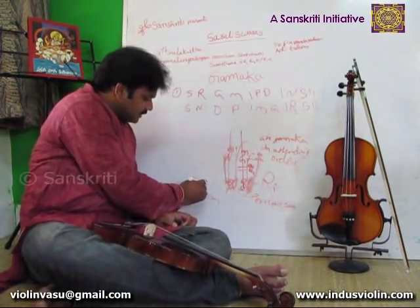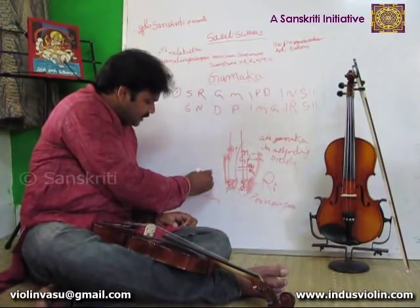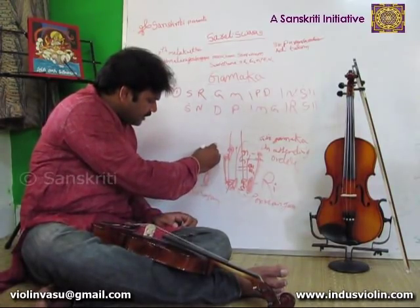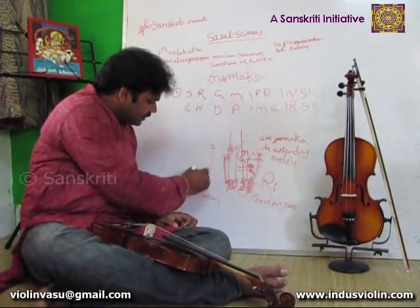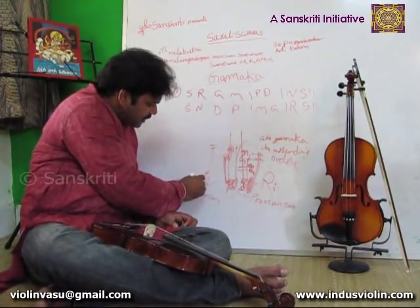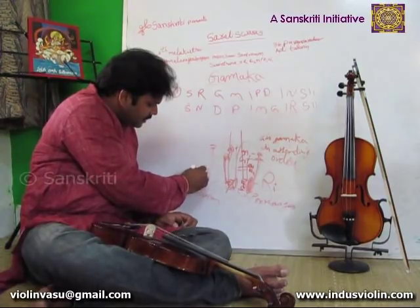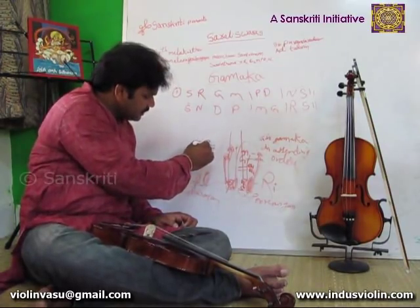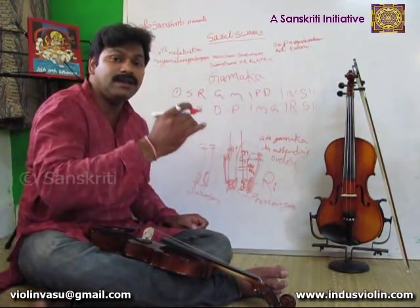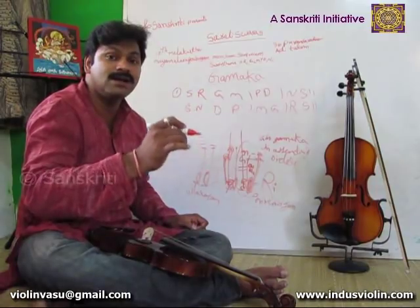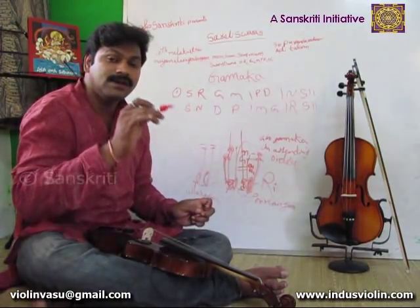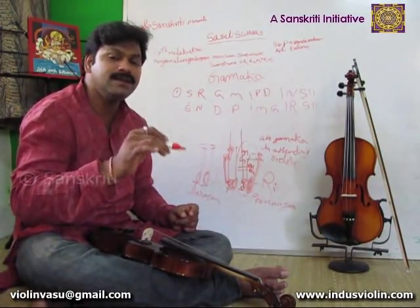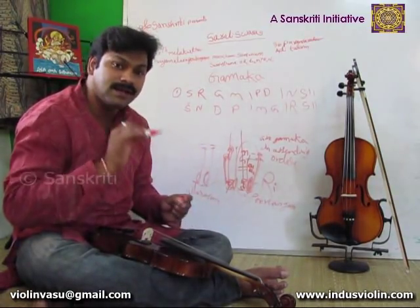The gammakam is like this: sa — sa li ga ma. And coming back: sa, ni, da, pa, ma, ga, ri, sa.